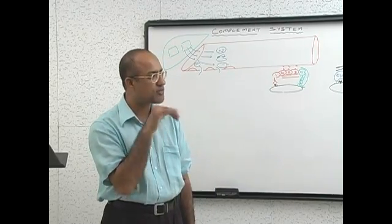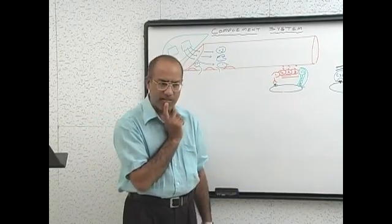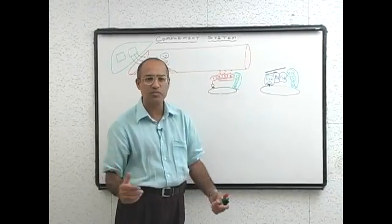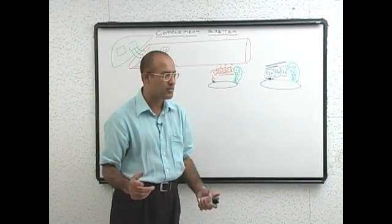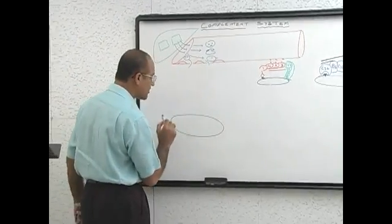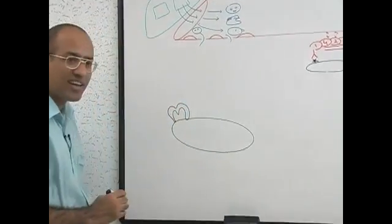So then they were thinking and there was no antibody. They said gram positive bacteria, if complements are directly activating and there is no antibody, it cannot be classical. And if there is no endotoxin, this cannot be alternate, there must be something else. Now they know it.